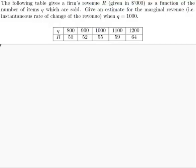The question is, the following table gives a firm's revenue R, given in thousands of dollars, as a function of the number of items Q which are sold. Give an estimate for the marginal revenue, i.e. the instantaneous rate of change of the revenue, when Q equals 1000.